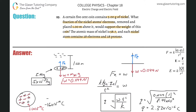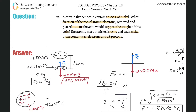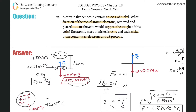Going back to our picture: the localized area of negative charges has a net charge of negative 2.33 times 10 to the minus 6 Coulombs, and the coin has a net charge of positive 2.33 times 10 to the minus 6 Coulombs. If you worked the problem forward — given these two charges separated by 1 meter — you'd find an electrostatic force of 0.049 newtons, equal to the weight.